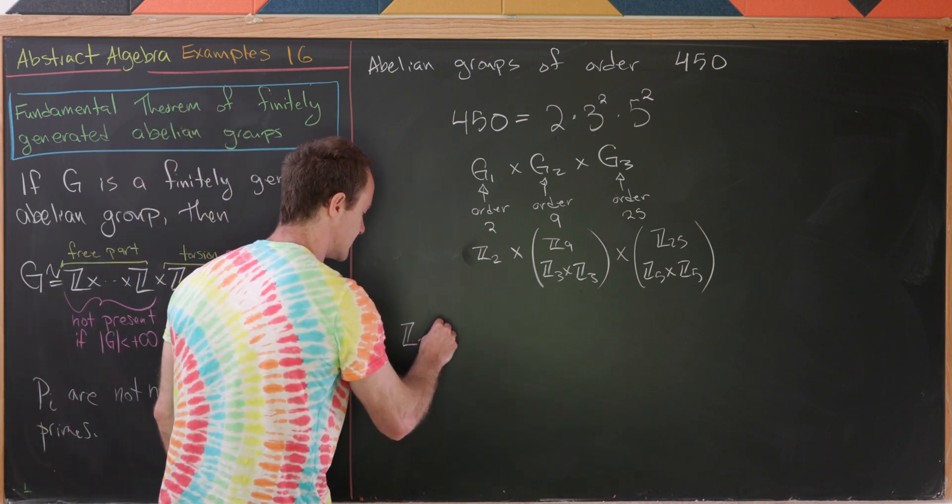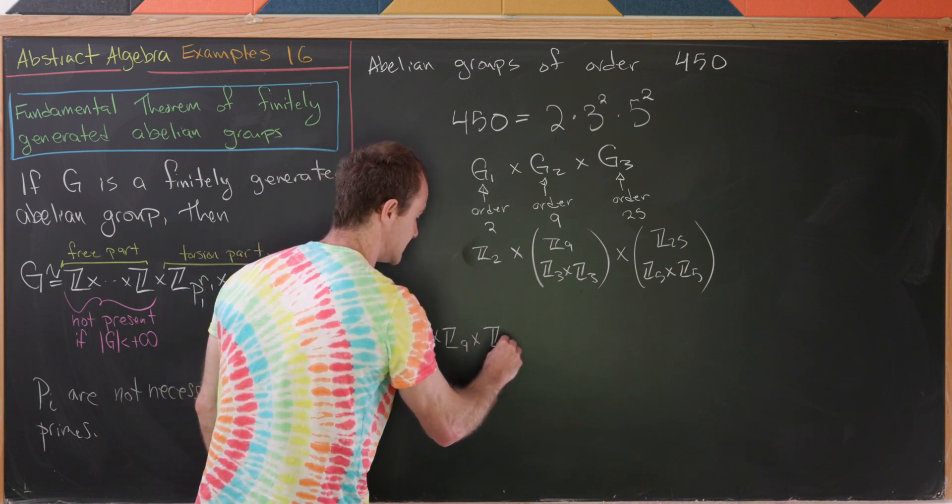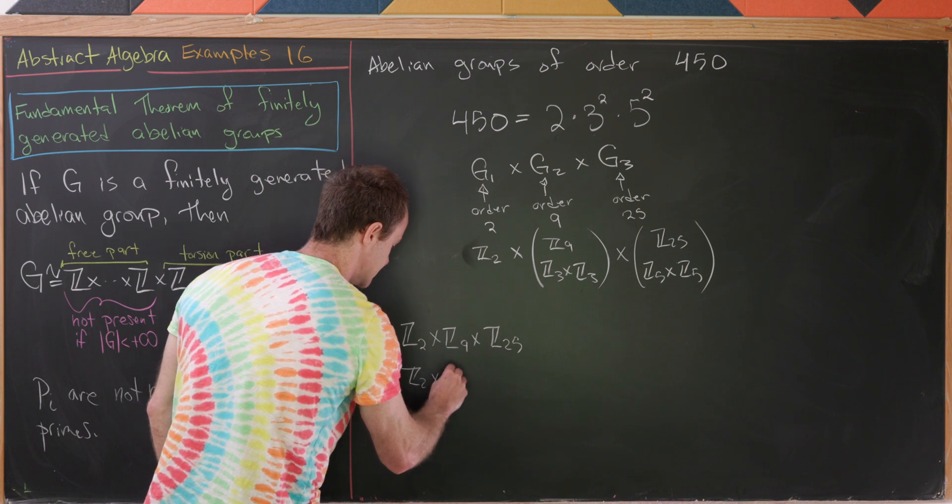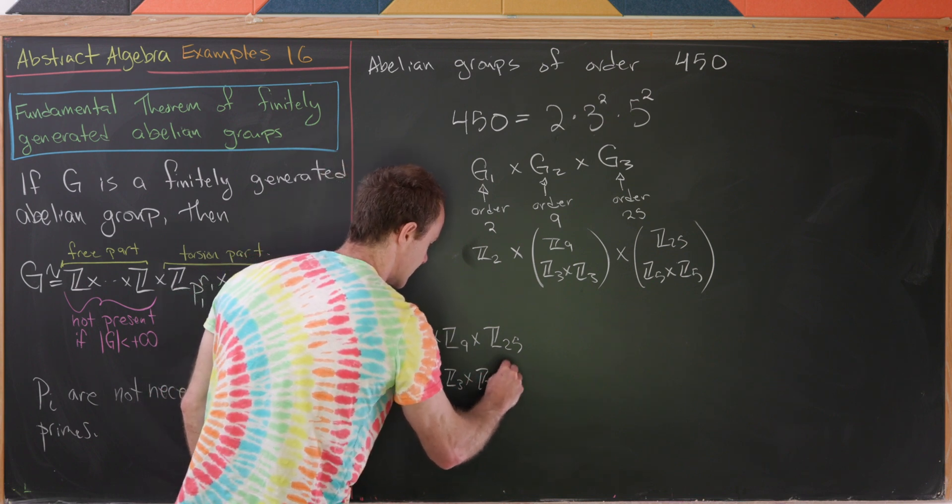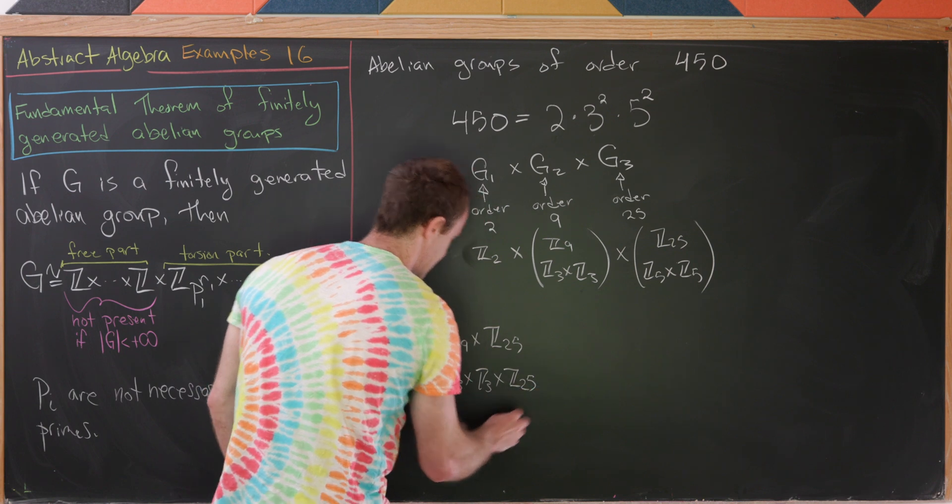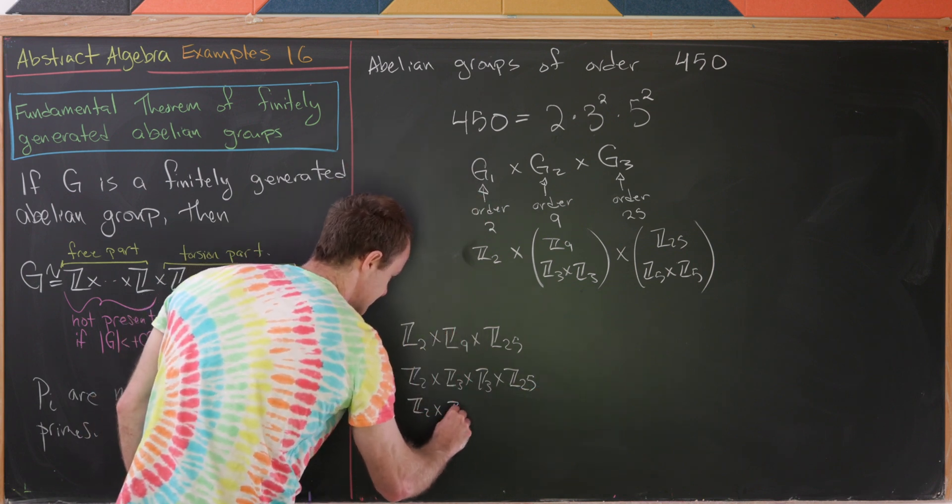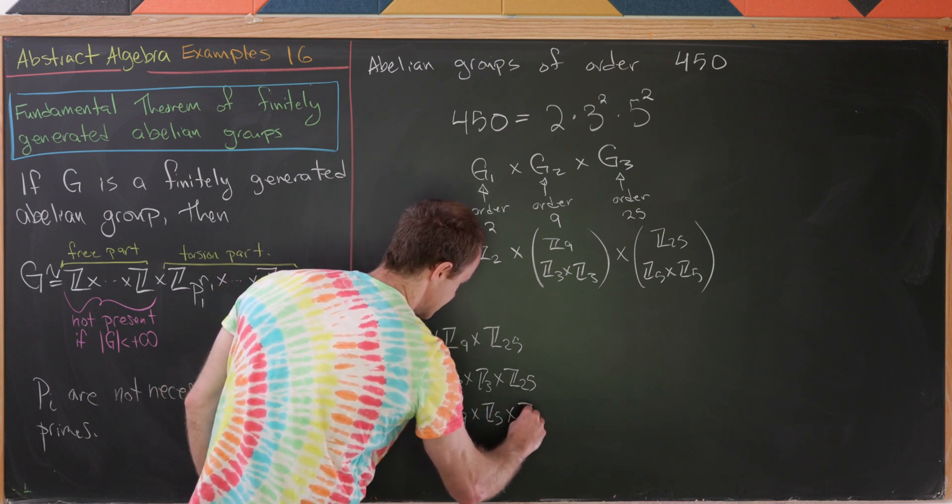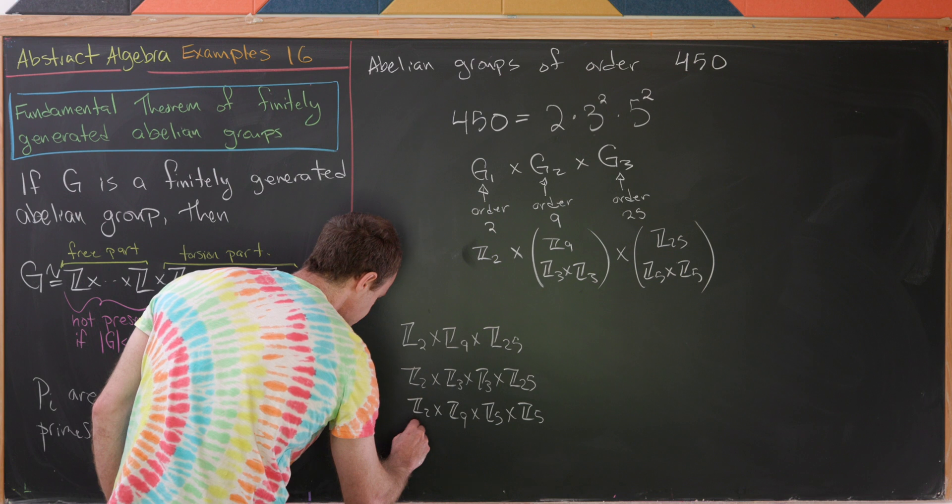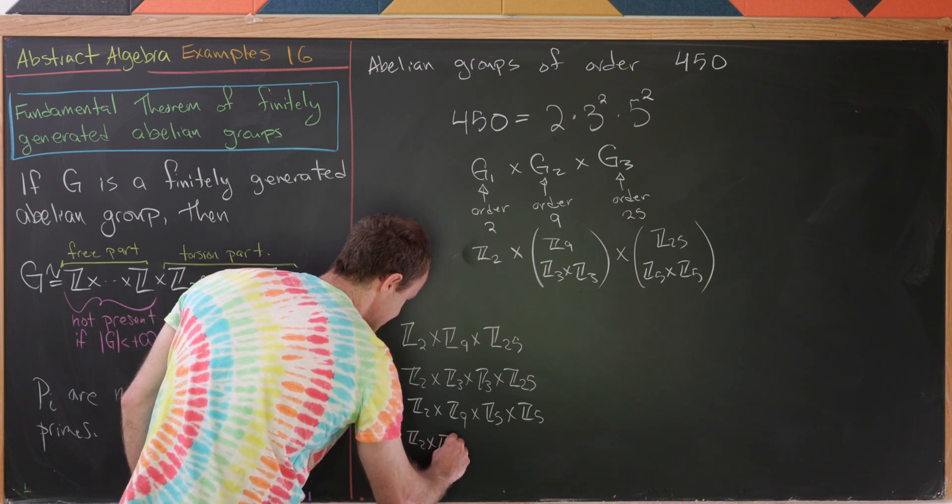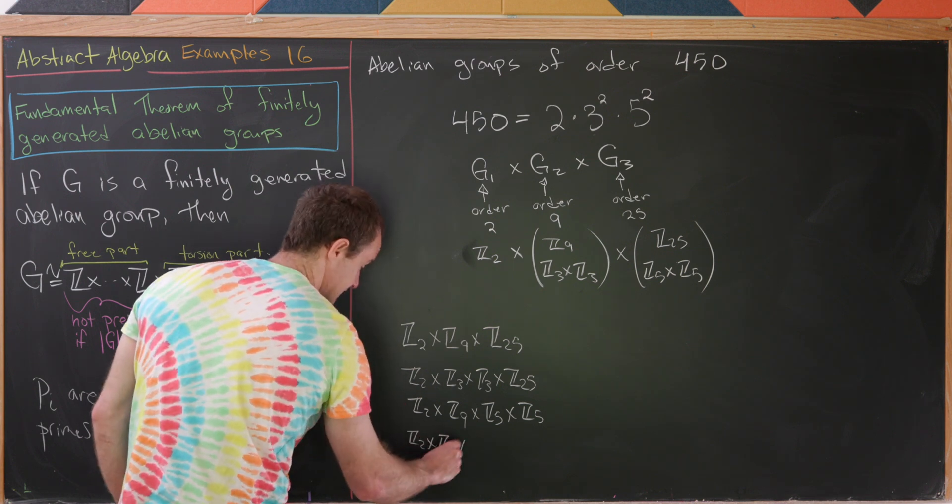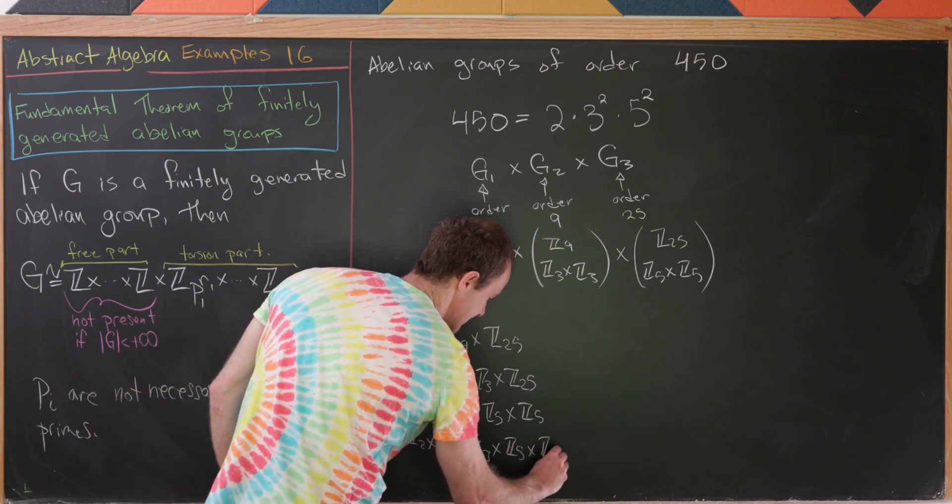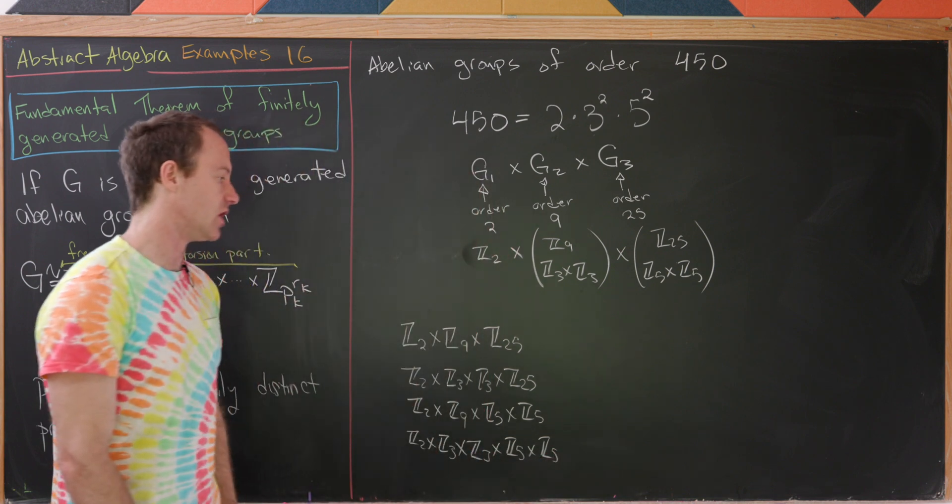And now we can enumerate them. There's Z2 cross Z9 cross Z25. There's Z2 cross Z3 cross Z3 cross Z25. There's Z2 cross Z9 cross Z5 cross Z5. And then finally, Z2 cross Z3 cross Z3 cross Z5 cross Z5. And those are all of our possibilities.